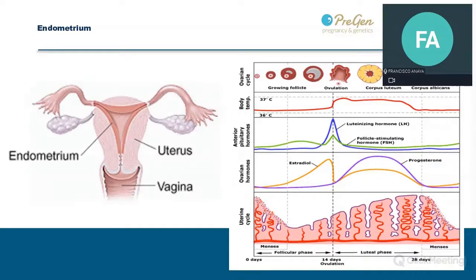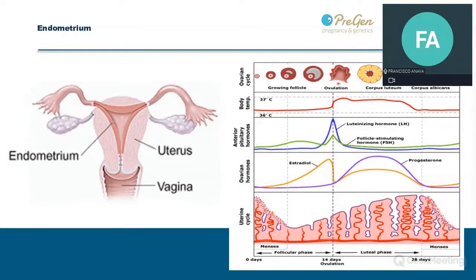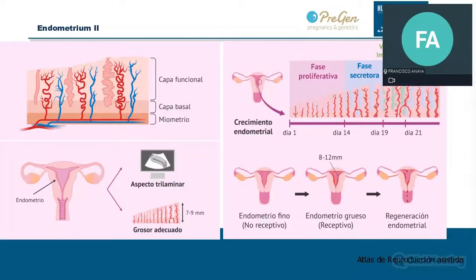There are two main phases in the endometrial cycle: the proliferative phase and the secretory phase. The proliferative phase is the first half of the menstrual cycle. During this phase, the main feature of the endometrial tissue is active proliferation and angiogenesis to ensure nutrition for the developing new tissue, while suppressing apoptotic factors.